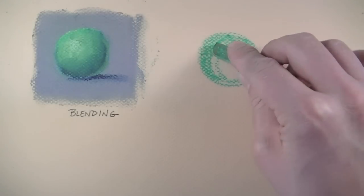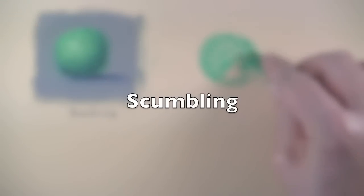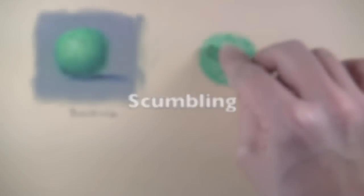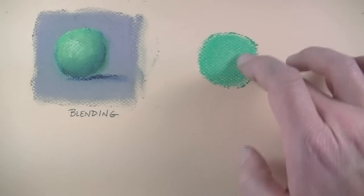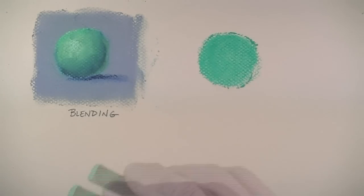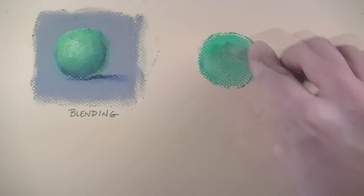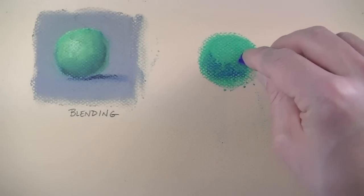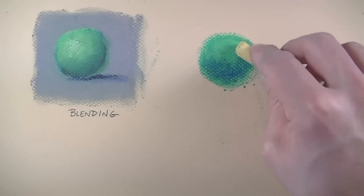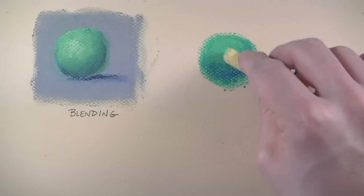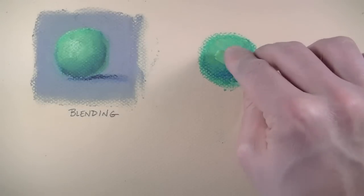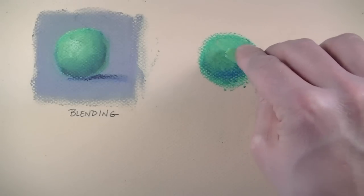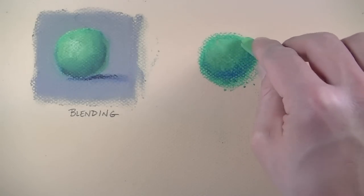The next technique is called scumbling. Scumbling occurs when opaque layers of pastel are lightly applied over the top of pre-existing layers of pastel. The result is optical color mixing. In this case we'll begin with a circle that is filled in completely with the local color green. We'll layer blue on top but no blending or smearing occurs. Instead light applications of the color are layered on top. This allows some of the color underneath to show through.